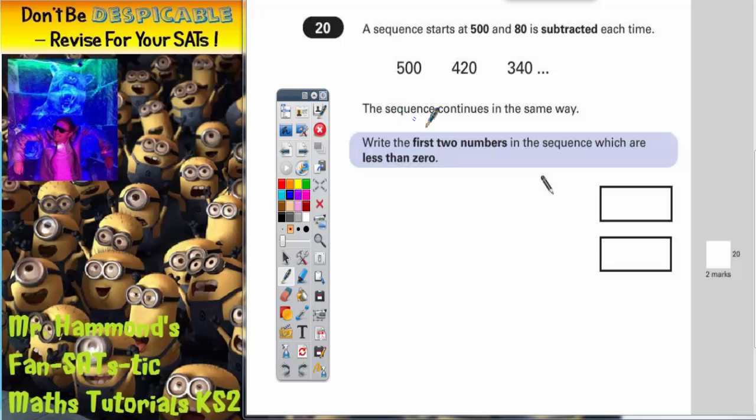Well, we could use a little trick. Instead of saying 500 take away 80, we could just look at the first two digits and say 50 take away 8. So 50 take away 8 is 42. Put the 0 at the end. 40 take away 8 is 34. Put the 0 at the end.